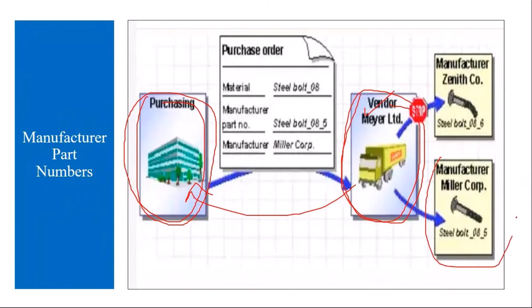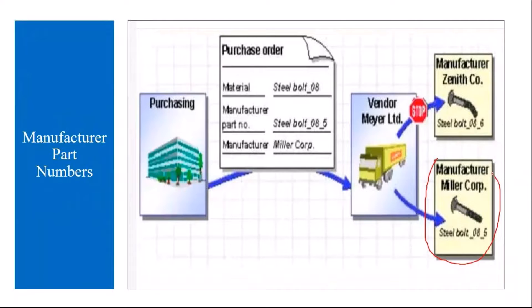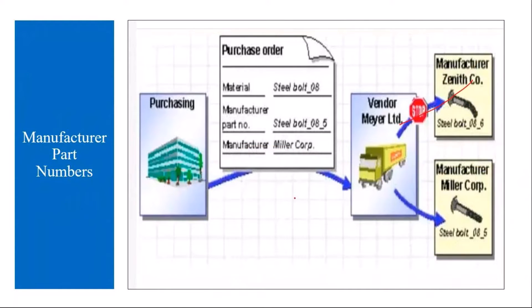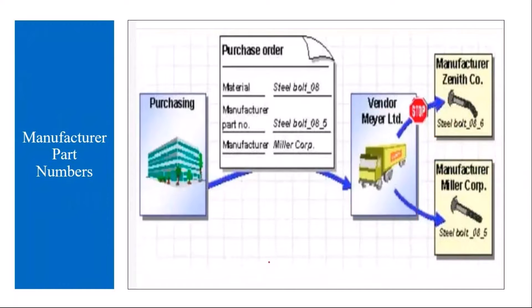That vendor in turn purchases this material from two different manufacturers. During your purchase order creation to the vendor, you tell the vendor that you need the material only from a specific manufacturer — you don't want material manufactured by the other one. So in this scenario, you will be using manufacturer part numbers. You have the vendor who purchases from two manufacturers, but you want material from only one manufacturer. That's when you use MPN.